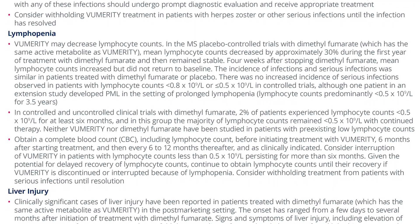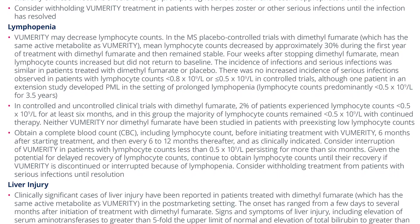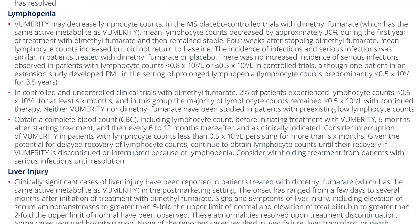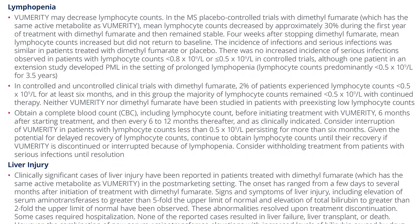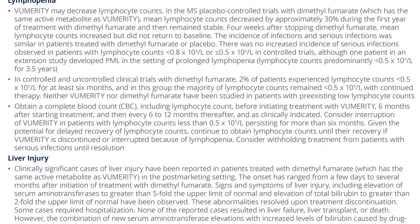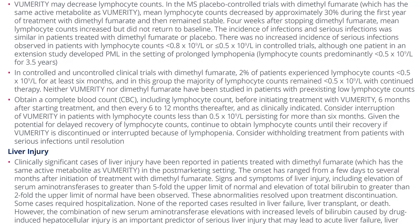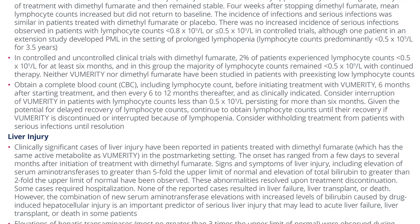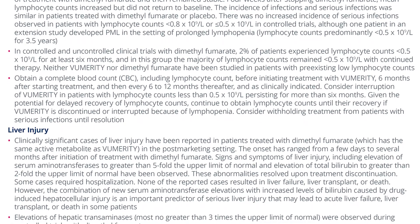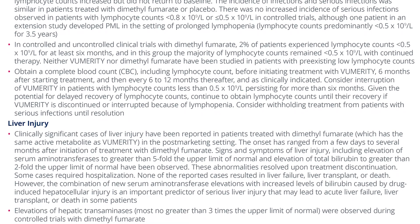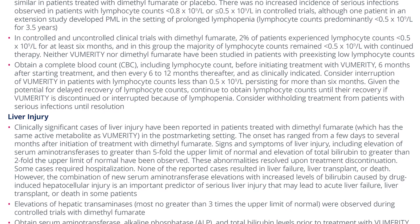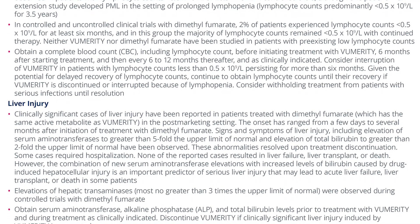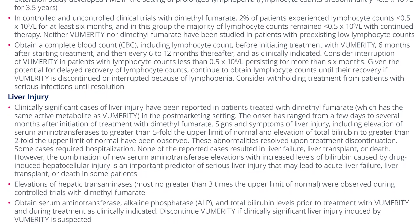In controlled and uncontrolled clinical trials with dimethyl fumarate, 2% of patients experienced lymphocyte counts less than 0.5 × 10⁹ per liter for at least 6 months, and in this group the majority remained below that threshold with continued therapy. Neither Vumerity nor dimethyl fumarate have been studied in patients with pre-existing low lymphocyte counts. Obtain a CBC including lymphocyte count before initiating Vumerity, 6 months after starting treatment, and then every 6 to 12 months thereafter. Consider interruption of Vumerity in patients with lymphocyte counts less than 0.5 × 10⁹ per liter persisting for more than 6 months. Continue to obtain lymphocyte counts until recovery if Vumerity is discontinued or interrupted because of lymphopenia. Consider withholding treatment from patients with serious infections until resolution.